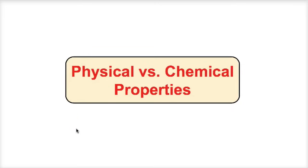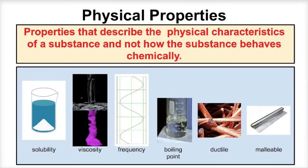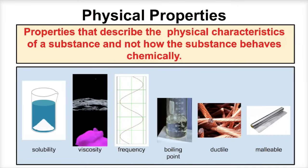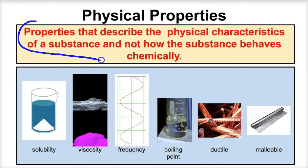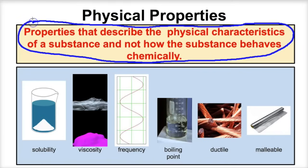Hey you guys, this is Mr. Millings, and today we're going to learn about physical versus chemical properties. Let's jump right in and take a look at what physical and chemical properties are. Physical properties are properties of matter that describe the physical characteristics of a substance and not how the substance behaves chemically. So physical properties will tell you how that substance behaves physically but not chemically.